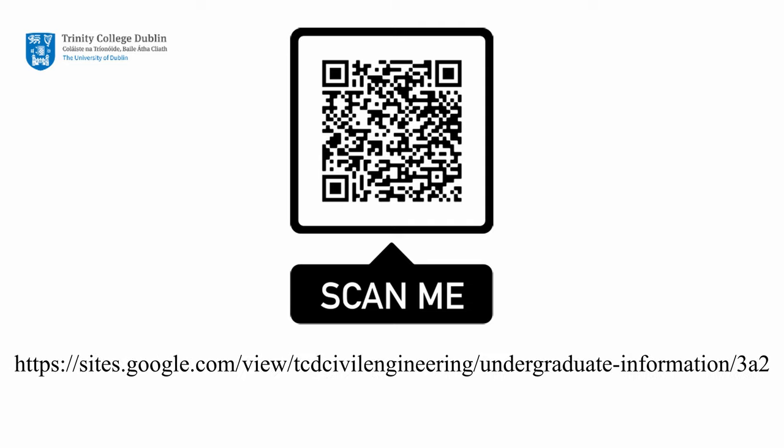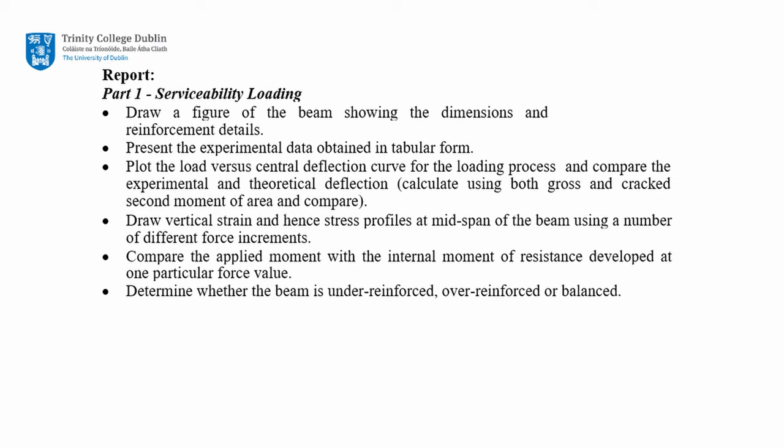The handout for this lab, as well as sample data from this experiment, may be found via either of the links on your screen. Please use the data to complete the lab report. The report is split into two parts: serviceability and ultimate loading. Part 1 — Serviceability Loading: draw a figure of the beam showing the dimensions and reinforcement details; present the experimental data in tabular form; plot the load versus central deflection curve and compare experimental and theoretical deflections, calculating using both gross and cracked second moment of area; draw vertical strain and stress profiles at mid-span for a number of different force increments; compare the applied moment with the internal moment of resistance at one particular force value; and determine whether the beam is under-reinforced, over-reinforced, or of balanced design.